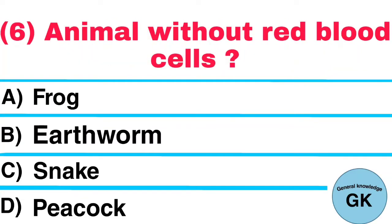Question number 6. Animal without red blood cells: A. Frog, B. Earthworm, C. Snake, D. Peacock. Answer: Earthworm.